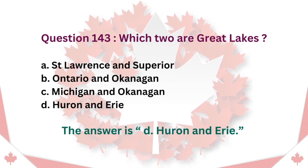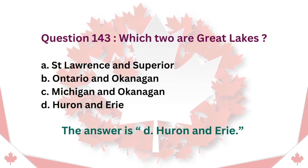Question 143: Which two are Great Lakes? A. St. Lawrence and Superior. B. Ontario and Okanagan. C. Michigan and Okanagan. D. Huron and Erie. The answer is D. Huron and Erie.